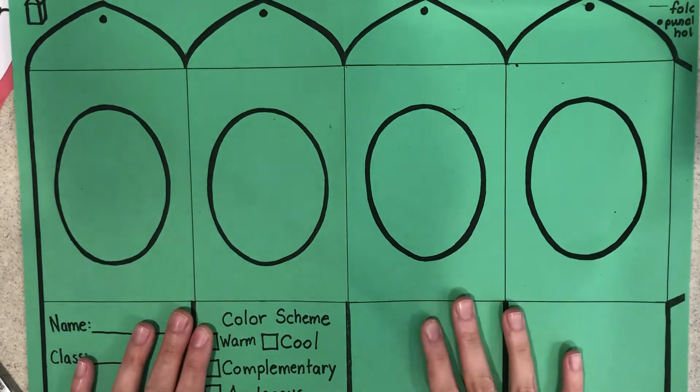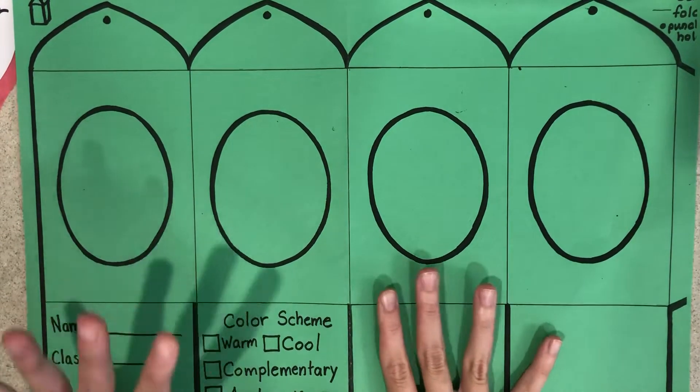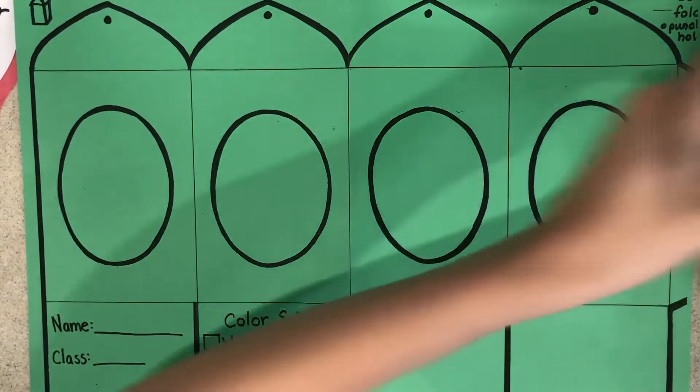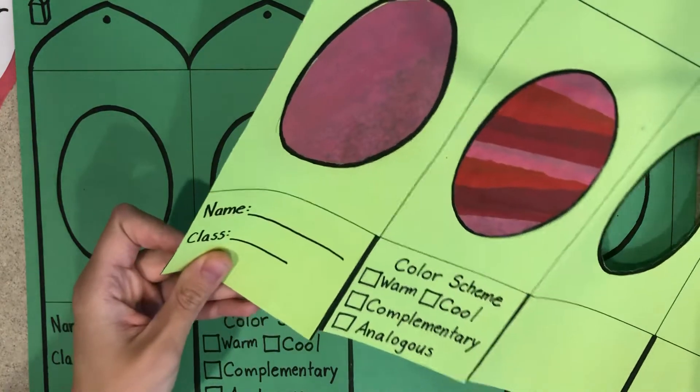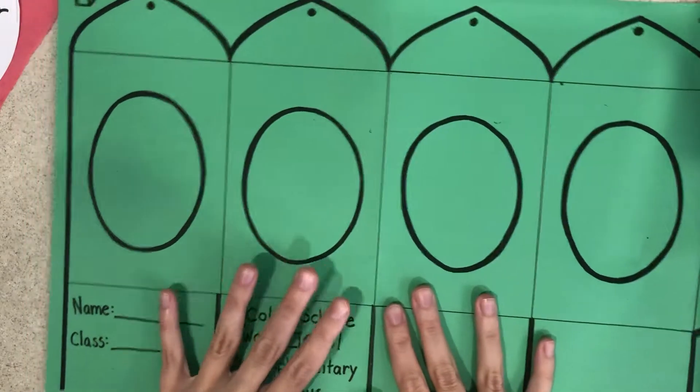In this tutorial I'm going to show you how to cut out and create tissue paper windows in our lantern. This is going to be a two-part tutorial so we're just going to learn those two steps first.